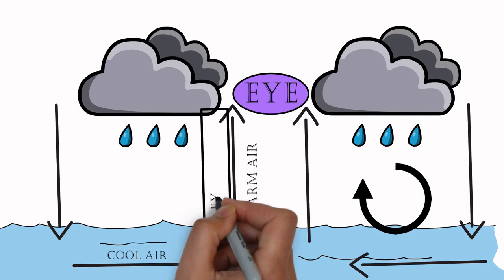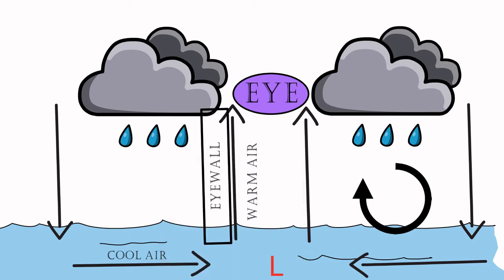An eye is formed in the center of the system when the storm system moves faster. The eye is the region of the system which is calm and clear. Here, it is a low pressure area. The air above this low pressure area moves down the eye when it cools.